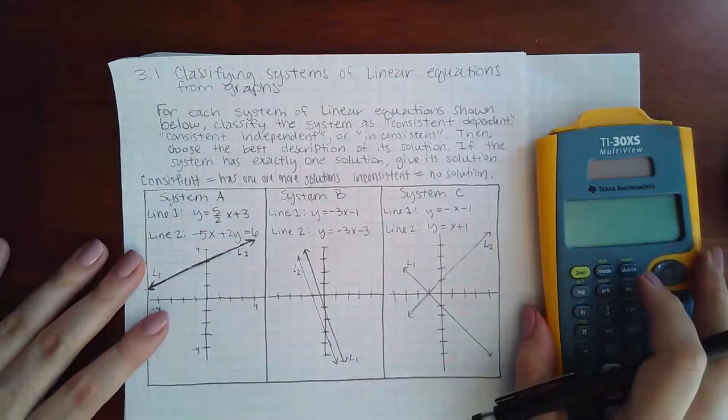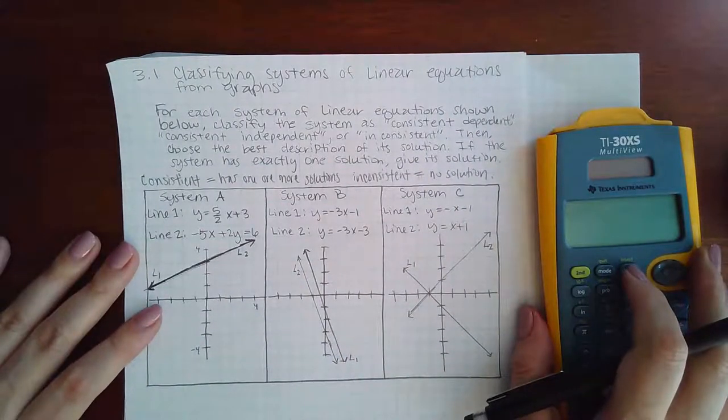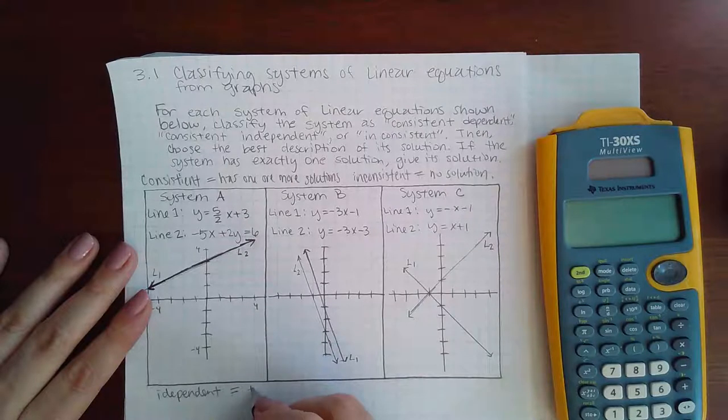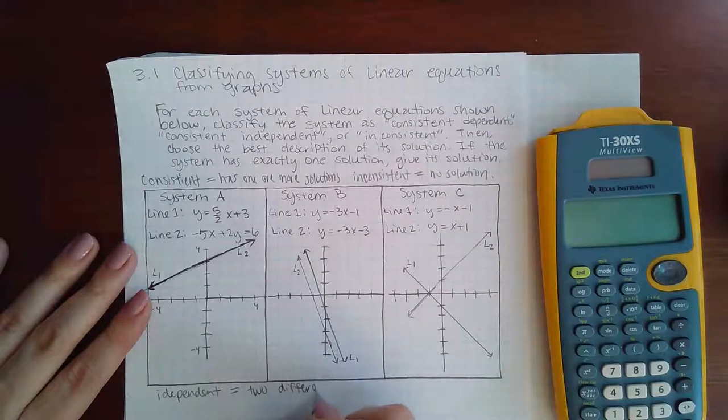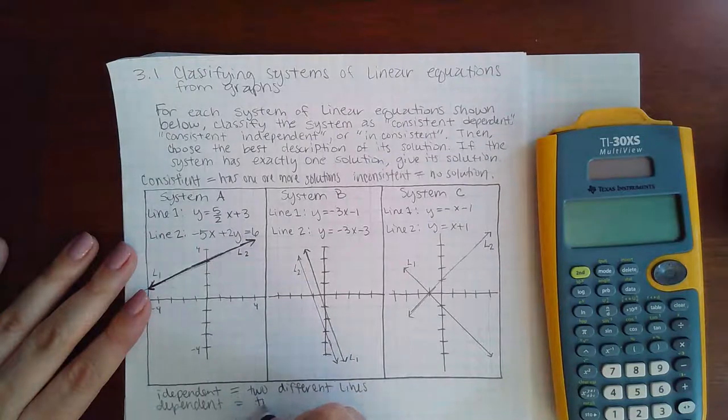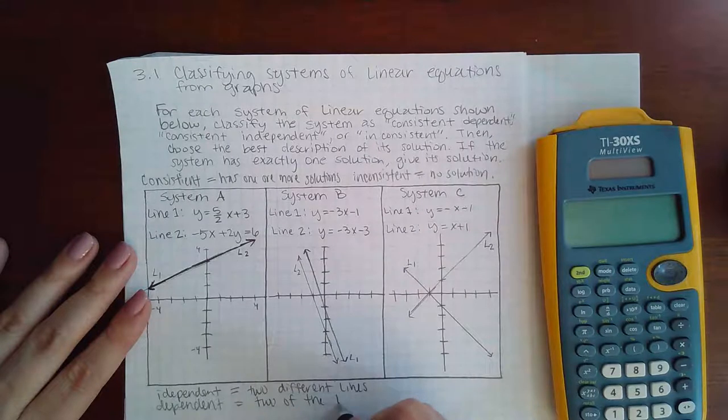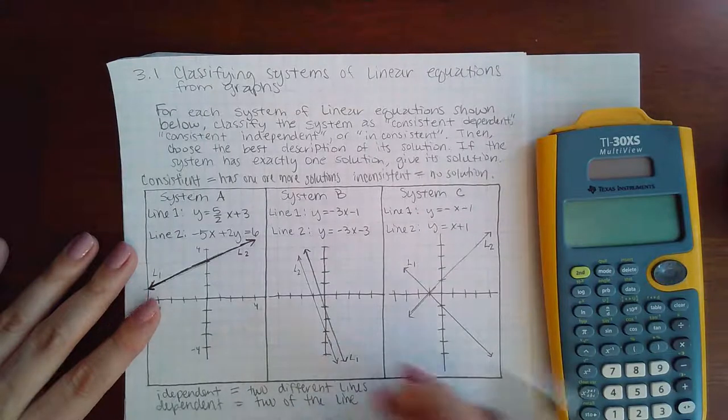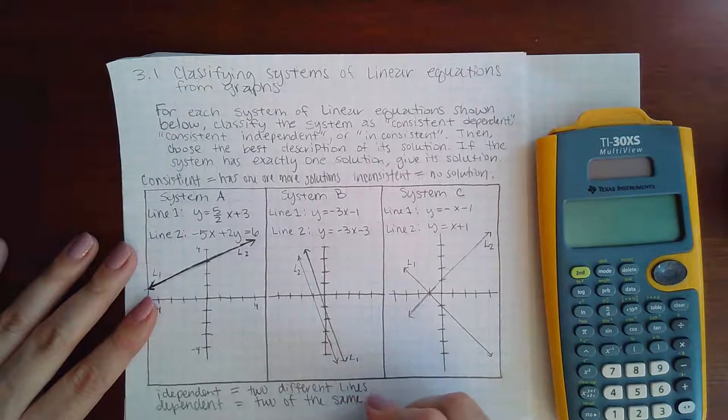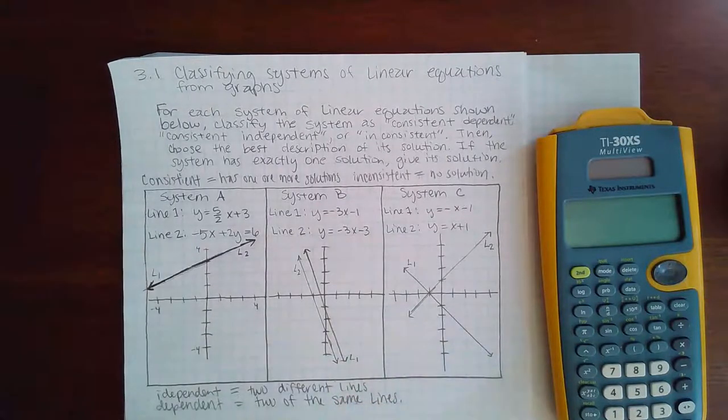Okay, then independent and dependent. Independent means they are two different lines, and then dependent means two of the same line. So even though I have two lines, they are exactly the same graph.